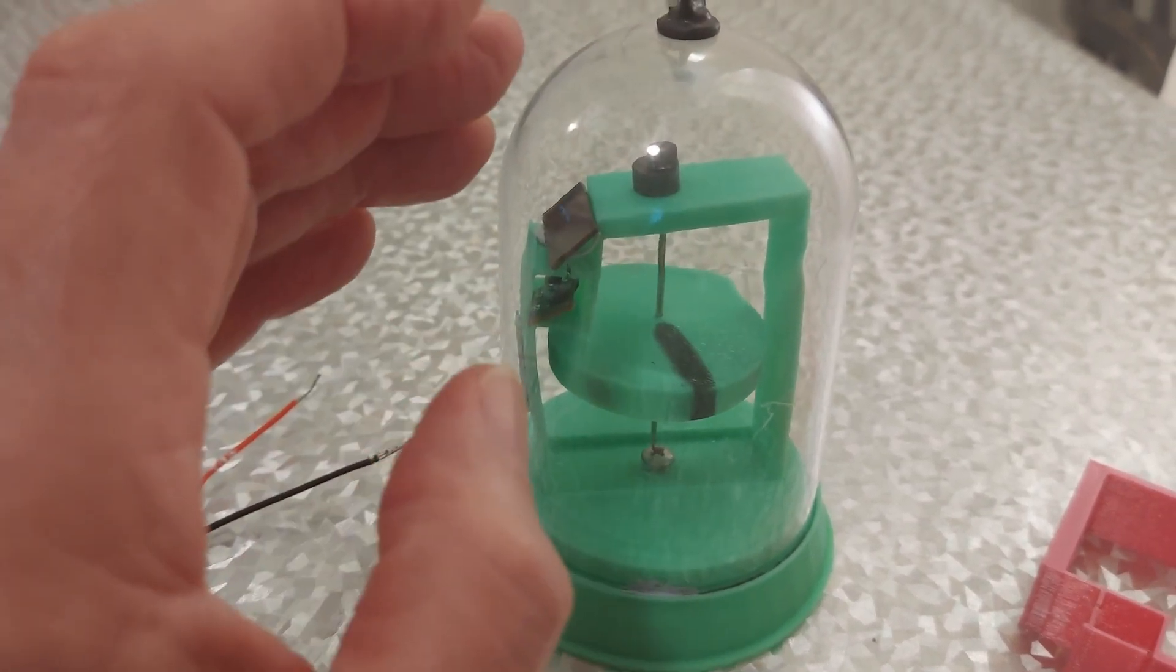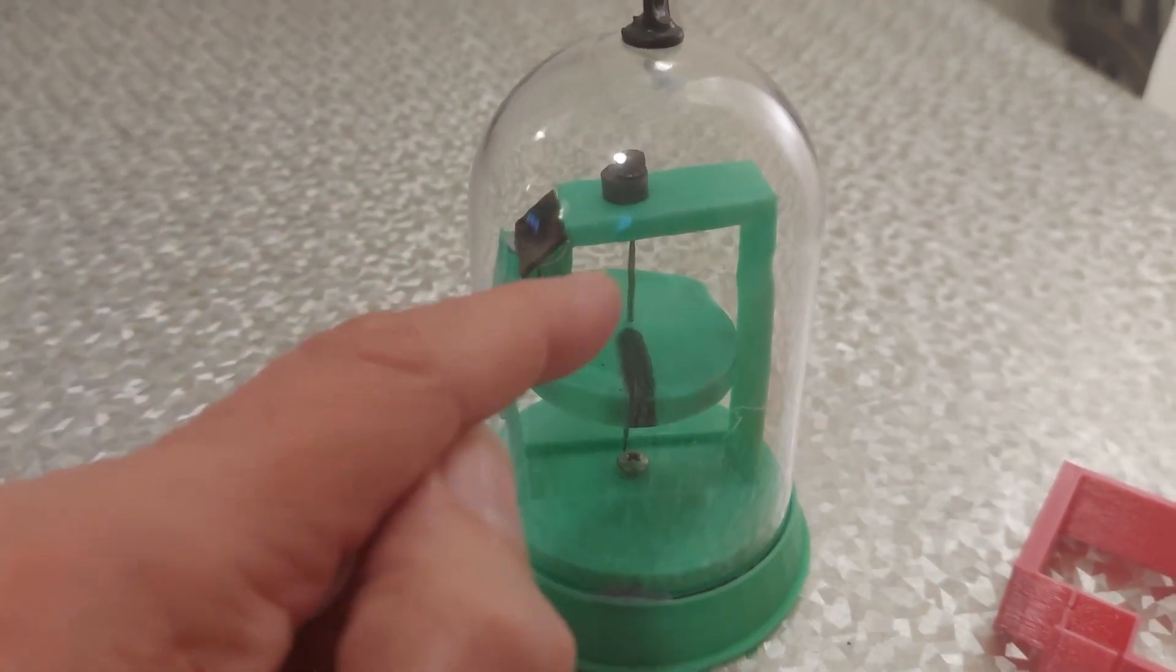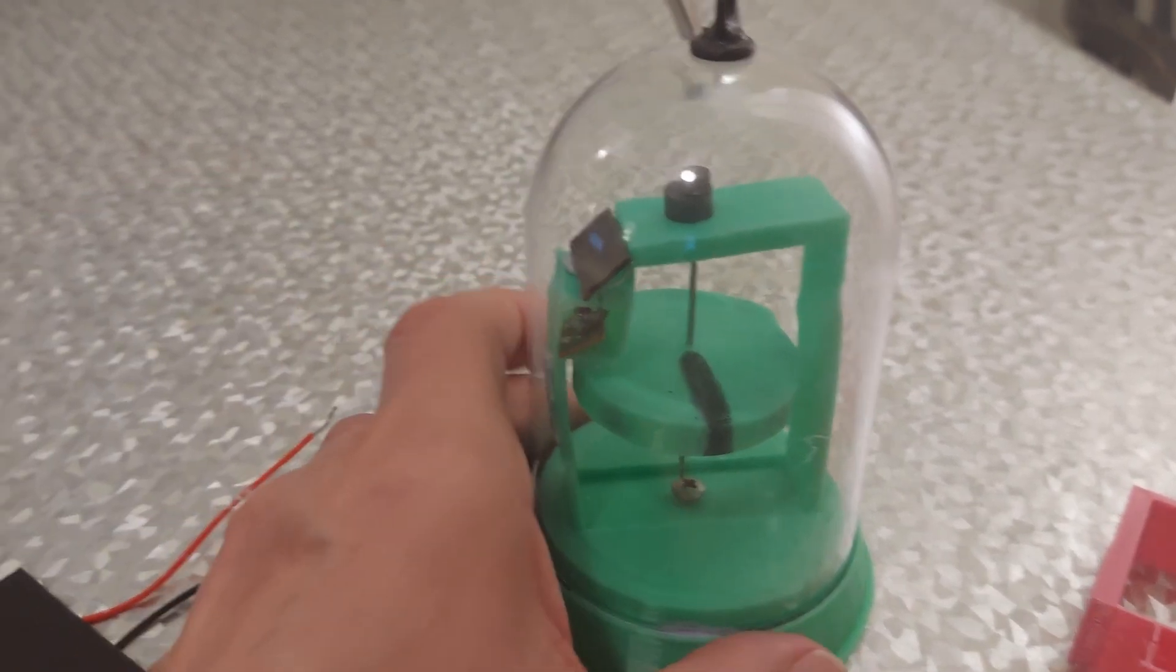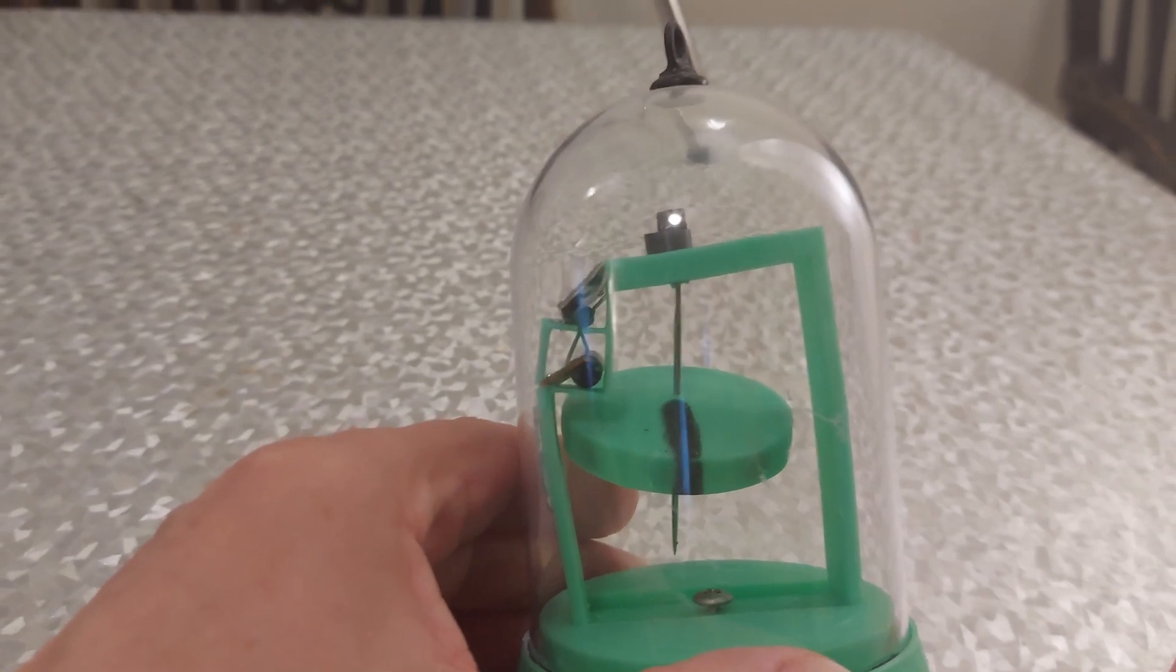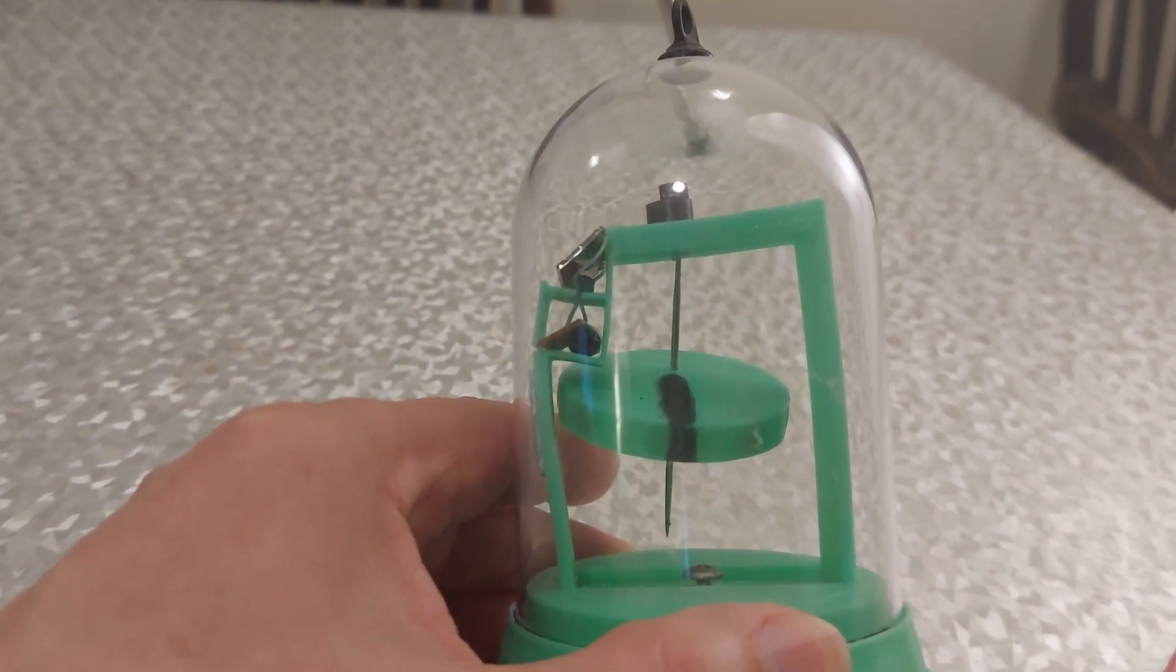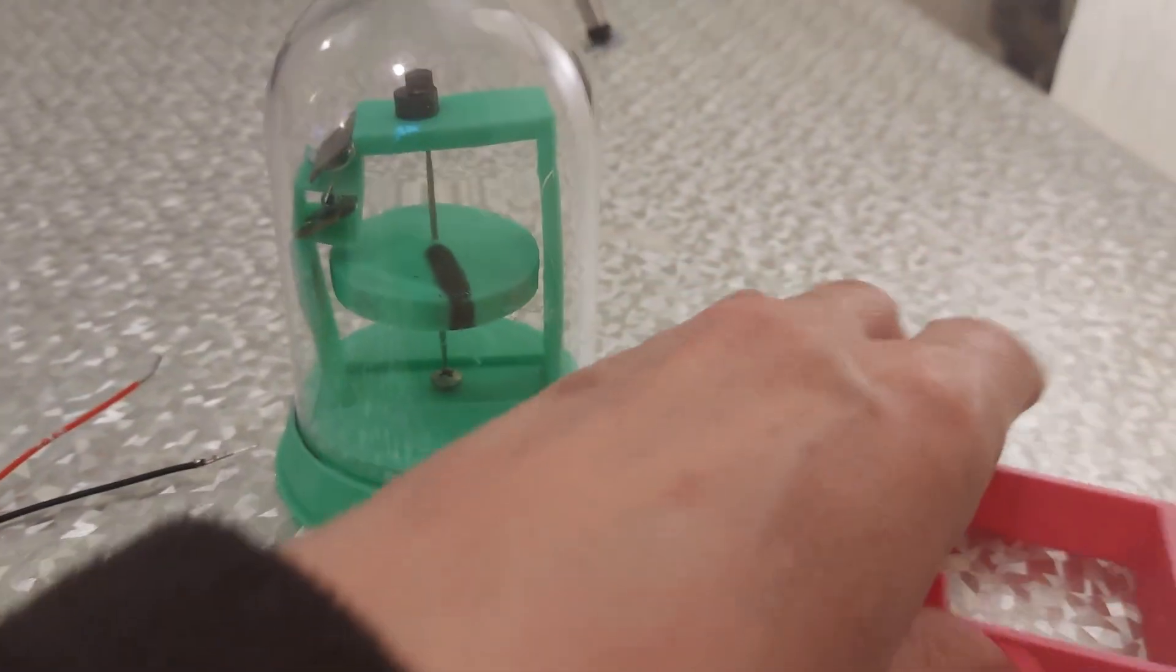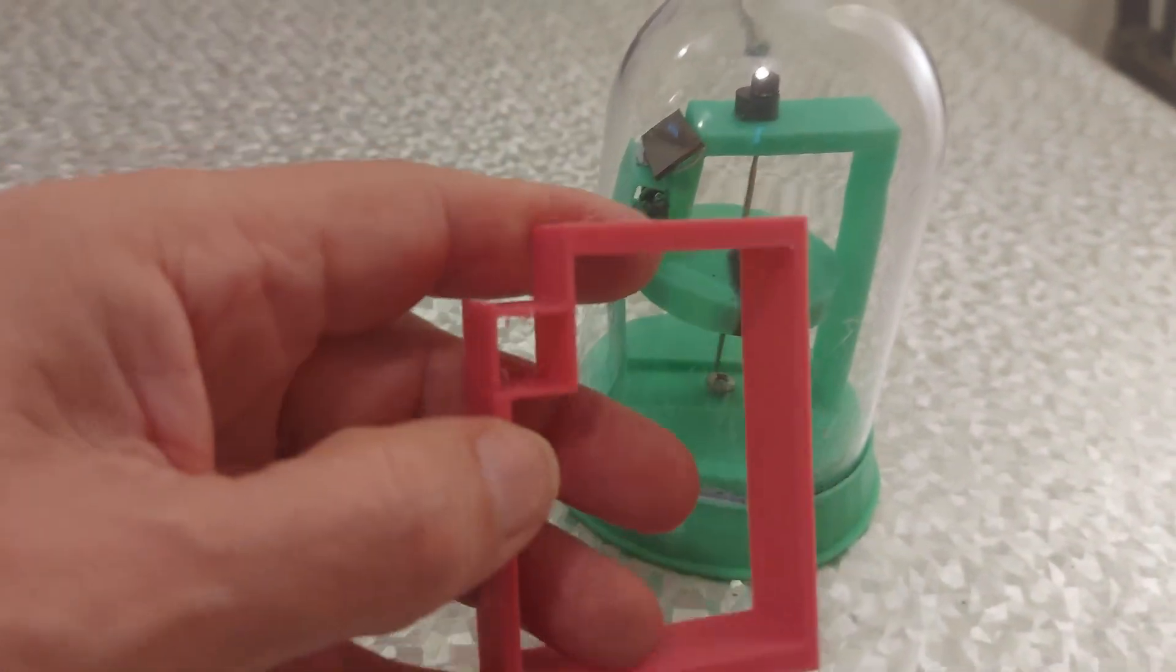But because it had been left in the sun, PLA, which this is printed from, goes soft in the sun. And you can probably see it's distorted. All this front side here is bent and bowed. So I've reprinted it.